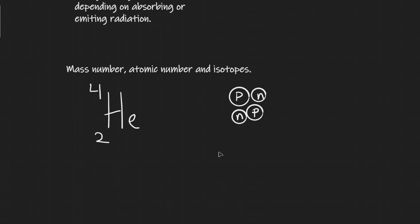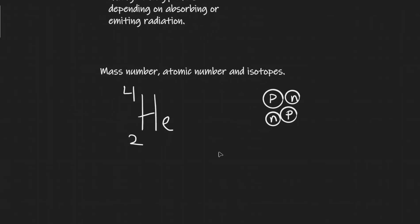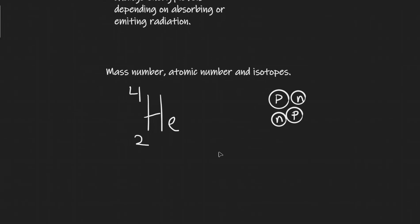The way we represent this is first of all with the mass number. So the mass number is simply the number of protons plus neutrons. So in this case this is equal to two plus two which is equal to four. This will of course be different for every element. For helium it's four. The atomic number is essentially the number of protons.